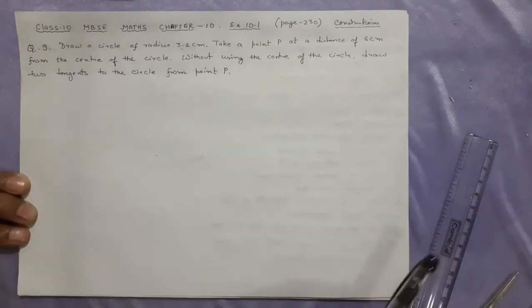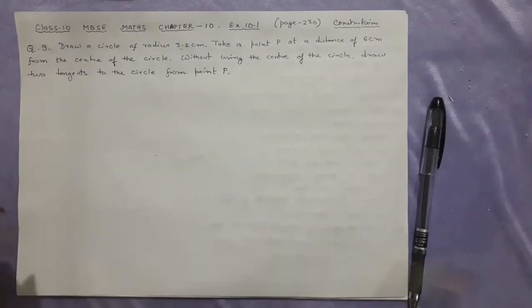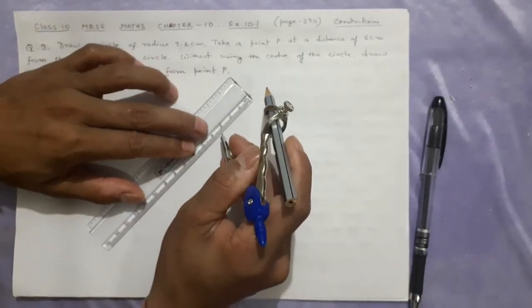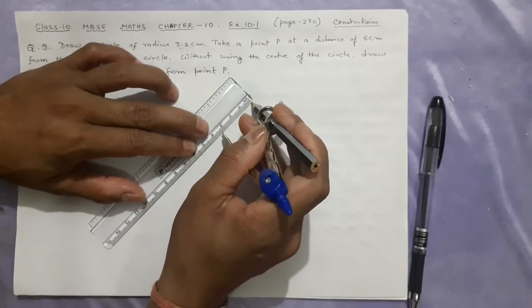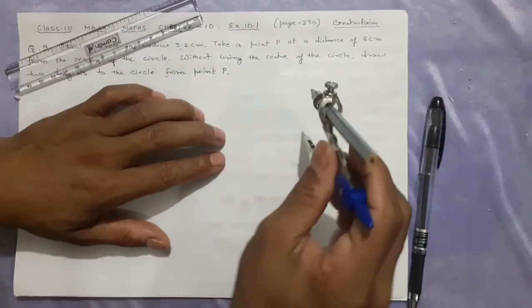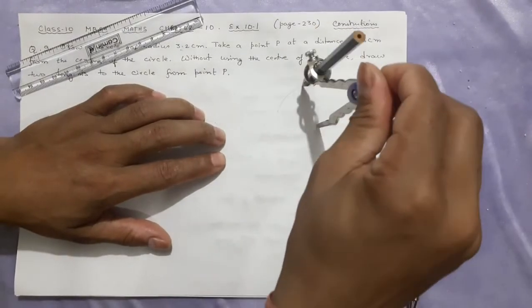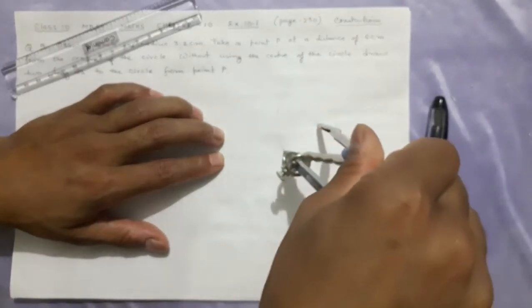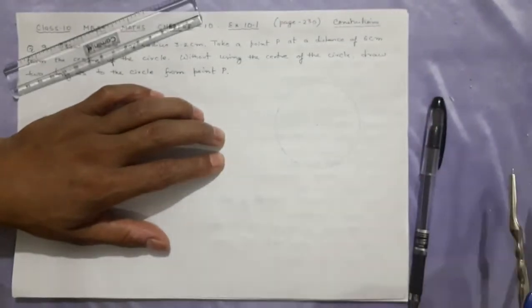Let us start. First I will make the circle of the given length. The radius is 3.2, that means 3 and 2. I'm measuring with the compass - two tips are there. Now, you are going to make it on the left side of the paper, because the right side will be used for making the tangent.